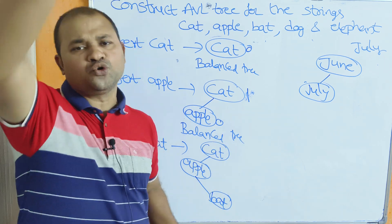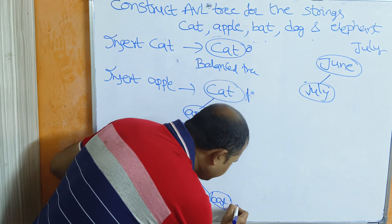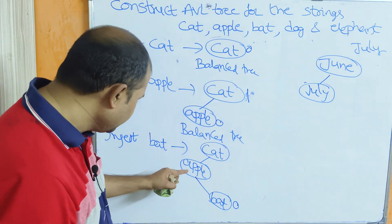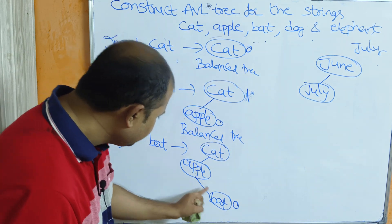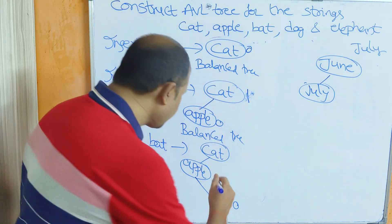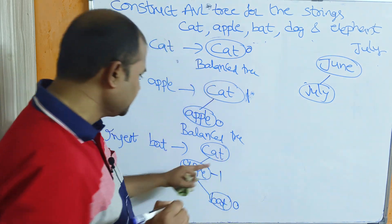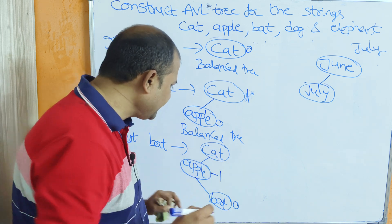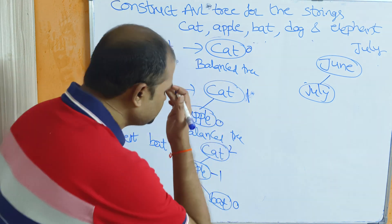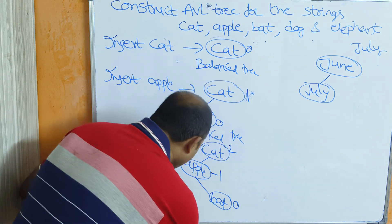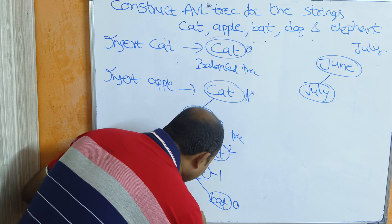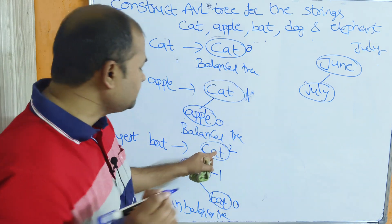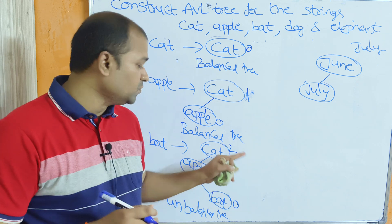The balance factor for leaf node bat is 0. For apple: left subtree height is 1, right subtree height is 0, so 1 minus 0 equals -1. Wait — for apple it is -1. For cat: left subtree height is 2, right subtree height is 0, so 2 minus 0 equals 2. This tree is unbalanced because the balance factor of the root node cat is 2.